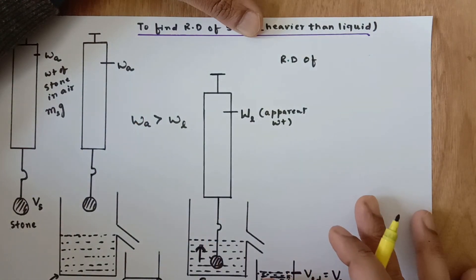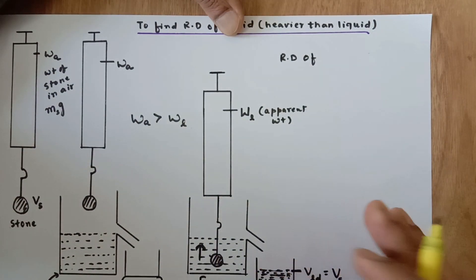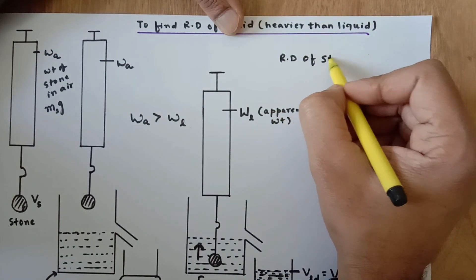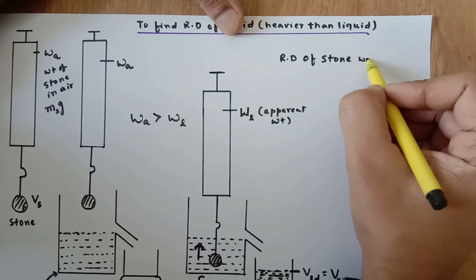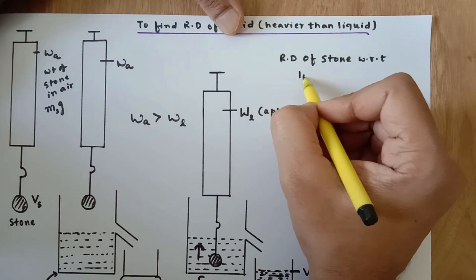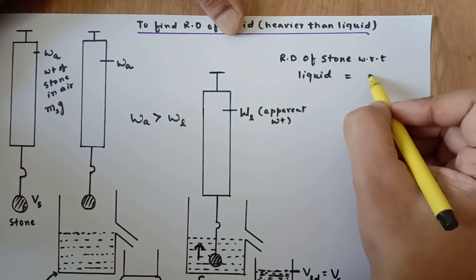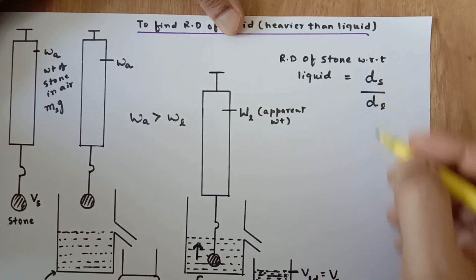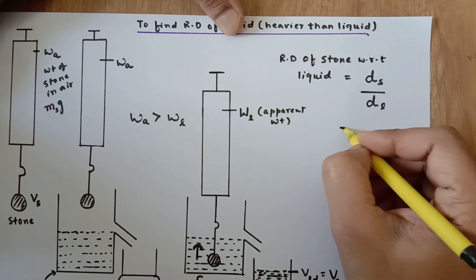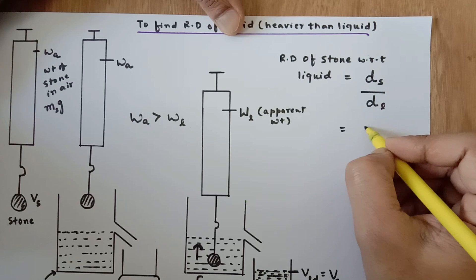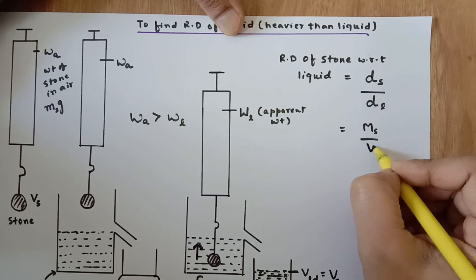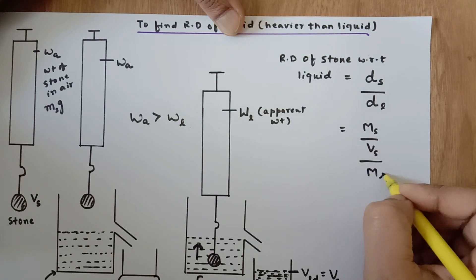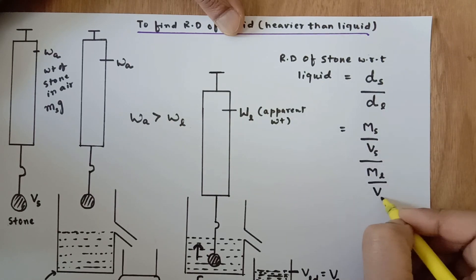Here I have taken a liquid; that liquid can be water also, but if it is water then this will be the specific gravity of the stone. The relative density with respect to liquid is equal to density of stone divided by density of liquid. Density of stone is mass of the stone divided by volume of the stone, upon density of liquid which equals mass of the liquid divided by volume of the liquid.